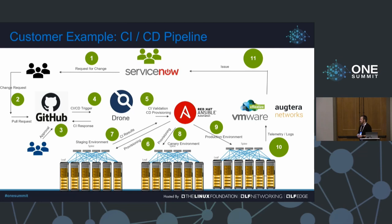An engineer, once they've created those changes, pushes to a specific branch within the Git repository. That will trigger the CI-CD system — in this case, we're utilizing Drone — to kick off the CI-CD process. You can use Ansible itself, Ansible's Automation Platform, AWX upstream, etc. The goal here isn't to be prescriptive, but to give you an example of what a CI-CD workflow looks like.